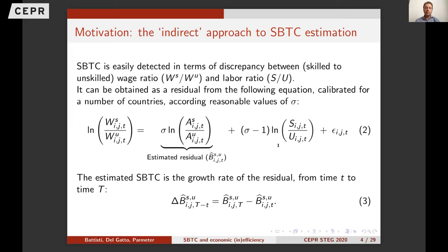If this is the case, we obtain the specific ATEM ratio — that is the relative technology at that point in time, non-neutral at a point in time — just calibrating for some reasonable values of sigma, which in the literature from Katz, Murphy, and others is usually around 1.5. When we run this procedure at two points in time — capital T for the future and lowercase t for the past — the rate of change of this measure gives us the skill-based technical change.